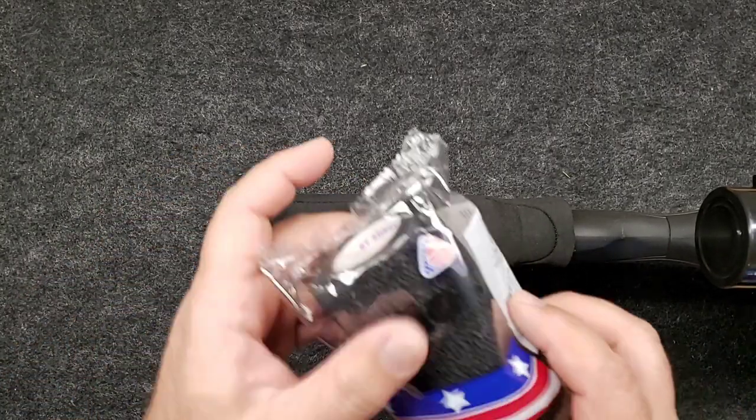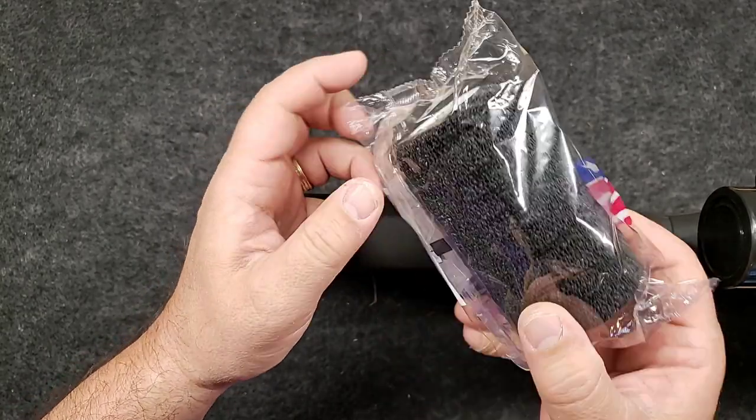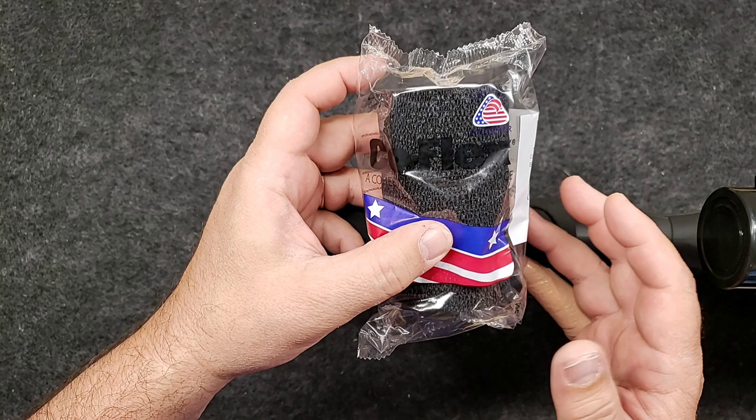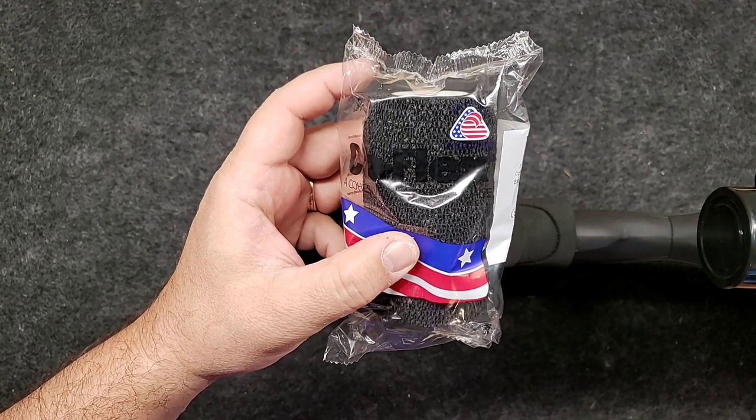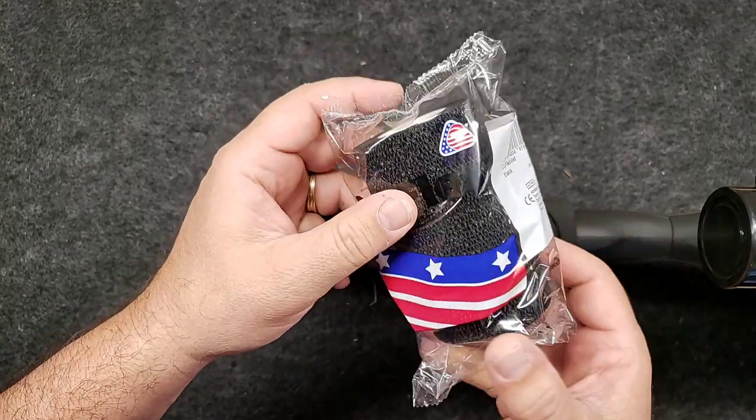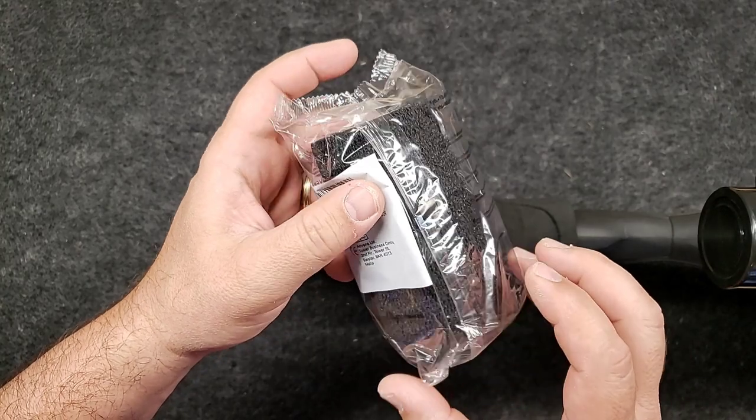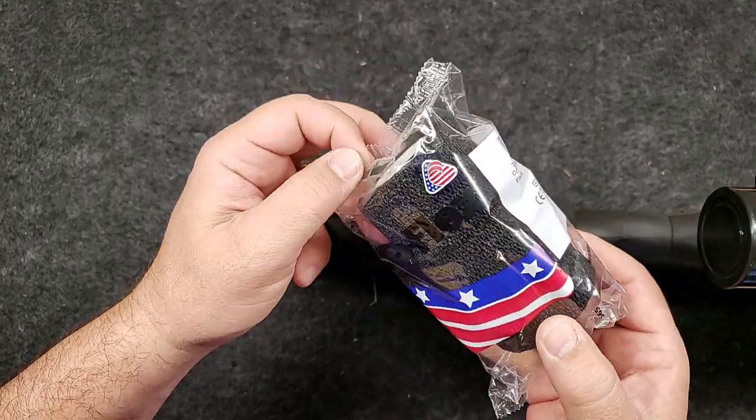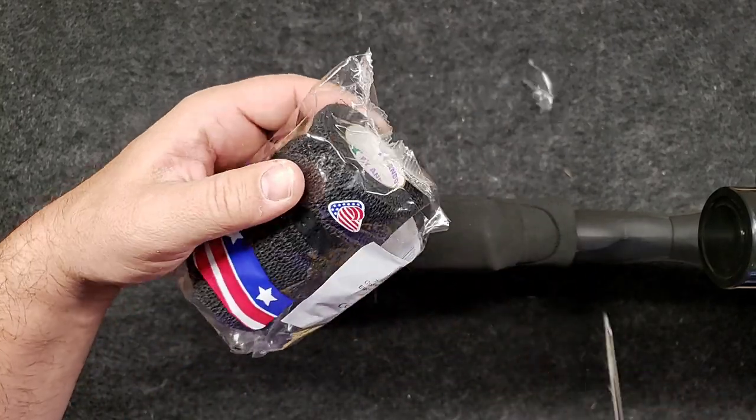I went to the local tractor store in my area called Bomgaars. Other areas might have a Tractor Supply, but any farm supply house will have this. It's just some vet tape used to wrap up ankles and stuff on horses and cattle. It's very sticky to itself but won't actually stick to the base product.